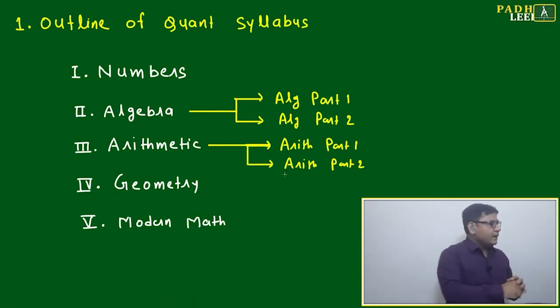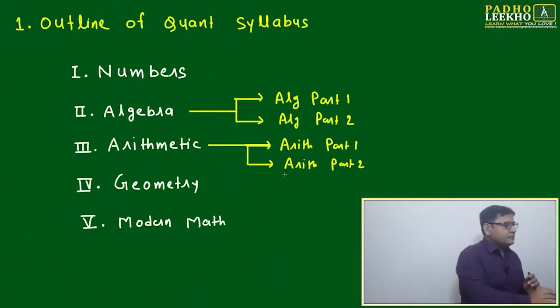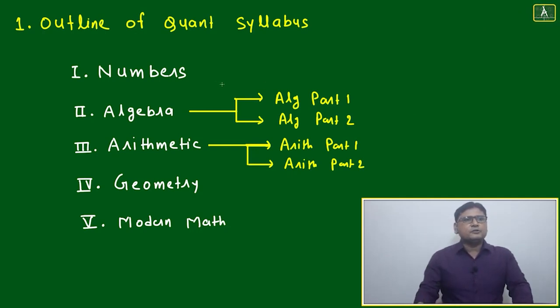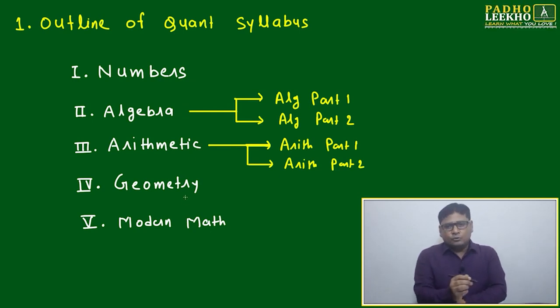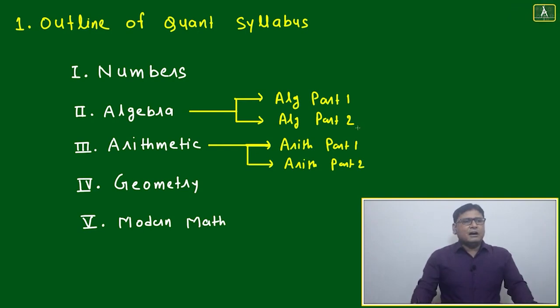The quant syllabus is divided into five major chapters: Numbers, Algebra, Arithmetic, Geometry, and Modern Math. Algebra is divided into two parts (Algebra Part 1 and Part 2), and Arithmetic is also divided into two parts (Arithmetic Part 1 and Part 2). First, we have to give priority to Numbers, Algebra Part 1, and Arithmetic Part 1. This is your Phase 1 level for quant.